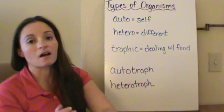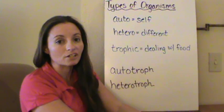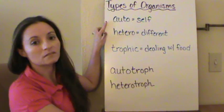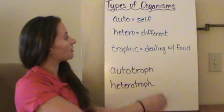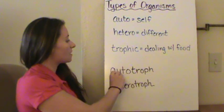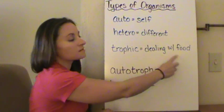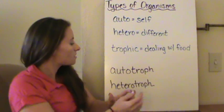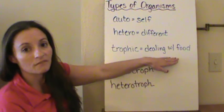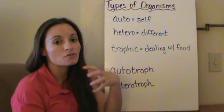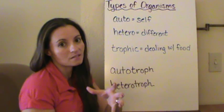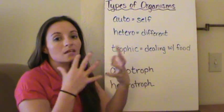Let's start by talking about the different types of organisms we have here on Earth. We're going to break down the words briefly. The prefix 'auto' means self. The prefix 'hetero' means different. And the suffix 'trophic' actually means to deal with food. So if I take the term autotrophic, I'm looking at self and dealing with food. These types of organisms who are autotrophic actually create their own food source — they take the energy from the sun and create that food source so that they can use it.